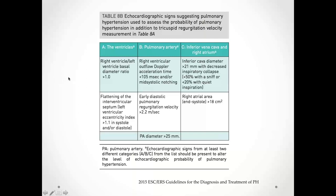Within the ventricles, key signs include: RV-to-LV basal diameter ratio greater than 1, and flattening of the interventricular septum with an eccentricity index greater than 1.1 in systole and/or diastole. For the pulmonary artery, they look for RVOT acceleration time less than 105 milliseconds and/or mid-systolic notching, early diastolic pulmonary regurgitation velocity over 2.2 meters per second, and PA diameter over 25 millimeters.